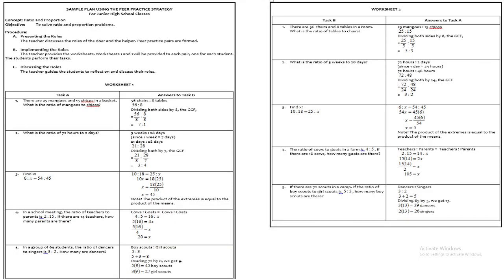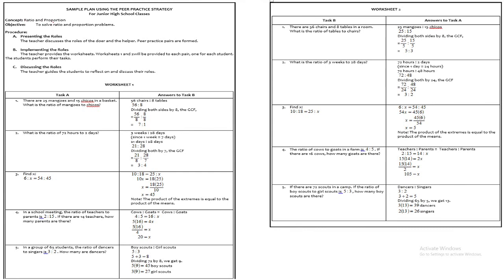Here is a sample plan using the peer practice strategy with the topic ratio and proportion. The plan includes: letter A — presenting the roles; implementing the roles; and discussing the roles. You can rephrase or copy that for your lesson plan. The important part is the two worksheets — if you have five questions in worksheet one, you should also have five questions in worksheet two. Take note of the many parts: Task A, Task B, answers to column B, and answers to column A.